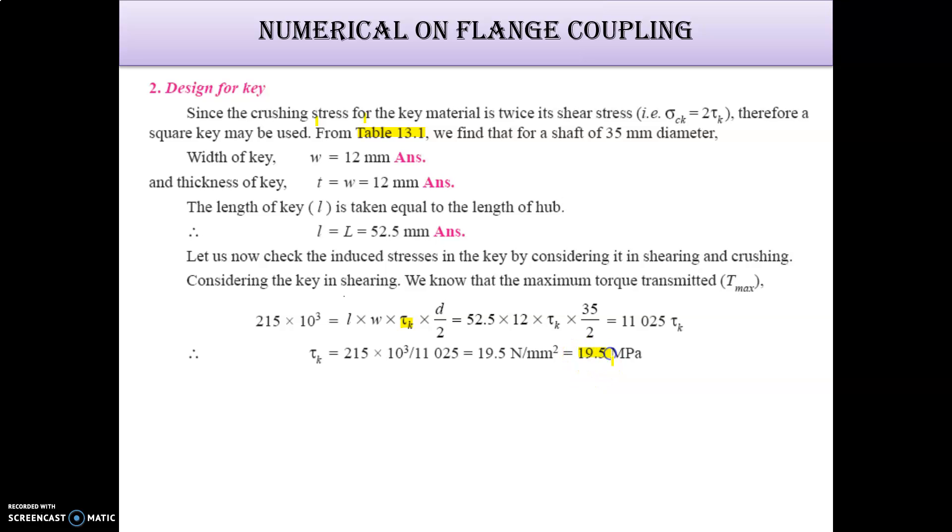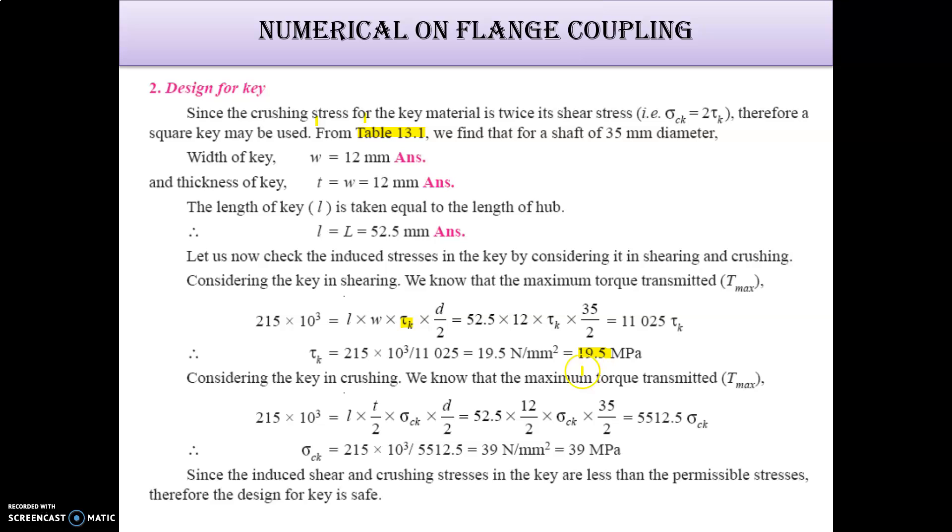Is 19.5, which is less than 40, so it is safe. For crushing stress, formula is L into T by 2 sigma CK into D by 2 equals T max. So it is 39 MPa and crushing stress is 18, so it is more safer. Key is safe.